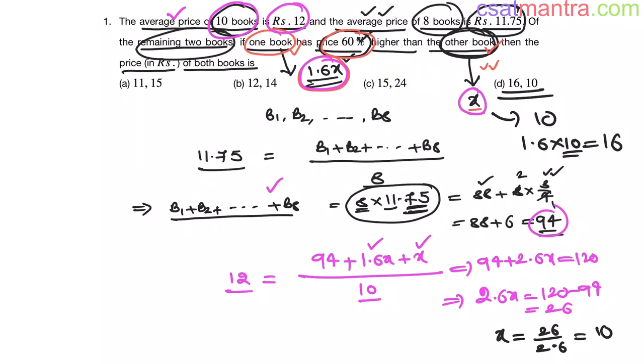All I did is write the given information into equations format and assume the unknown values. This is very important. We do not know the other book price, that is why I assumed it and then found the value of X. Now if you observe, there are 2 options which follow this condition 60% higher than other book. 16 is 60% higher than 10 rupees, 24 is 60% higher than 15 rupees. So we ended up with 2 options. We cannot use elimination method and solve this question. We have to solve by conventional method only like this.